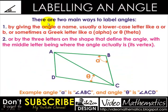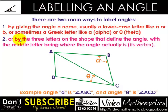Then we go for labeling an angle. Labeling an angle is another process to learn. There are two main ways to label angles: by giving the angle a name, usually a lowercase letter like a or b, or sometimes a Greek letter like alpha or theta; and the second way is by using three letters on the shape that define the angle, with the middle letter being where the angle actually is — its vertex.